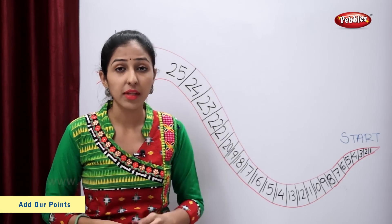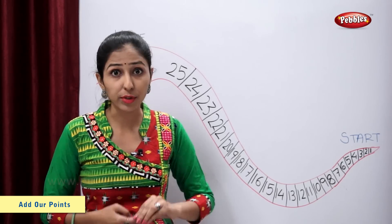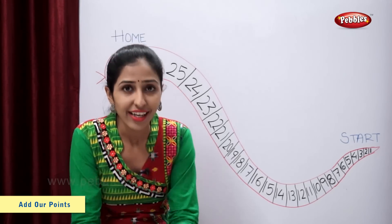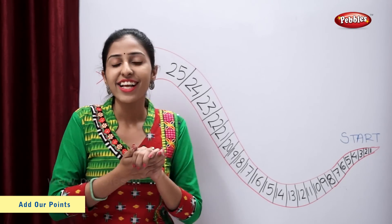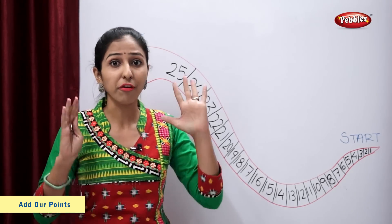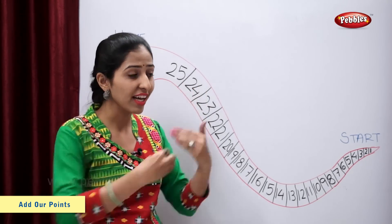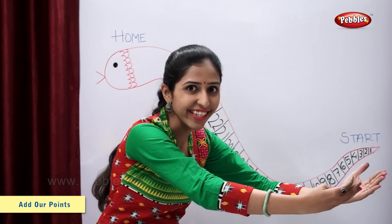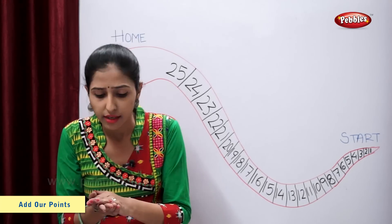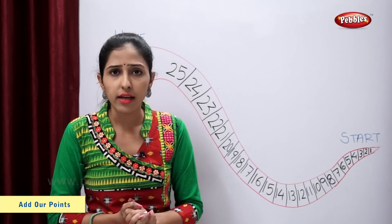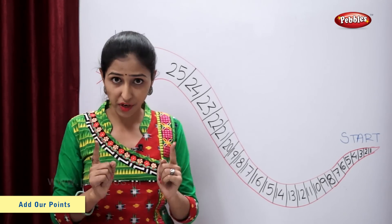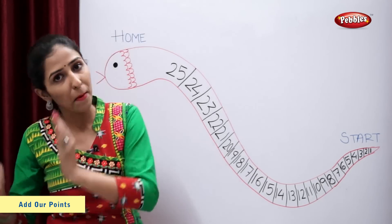Let's play a game. I'm going to toss this coin. If I'm getting heads, I will move 5 steps ahead. If I'm getting tails, I will move one step back.